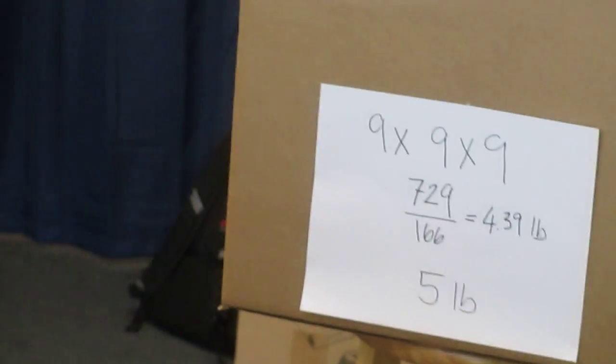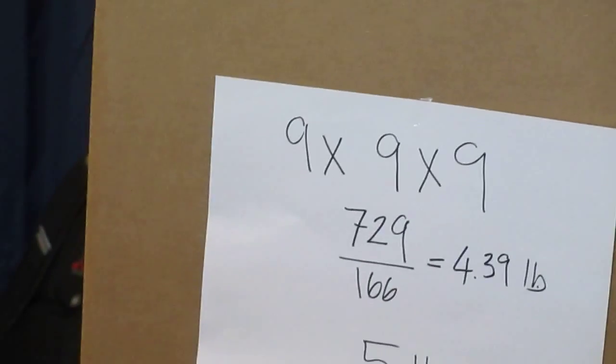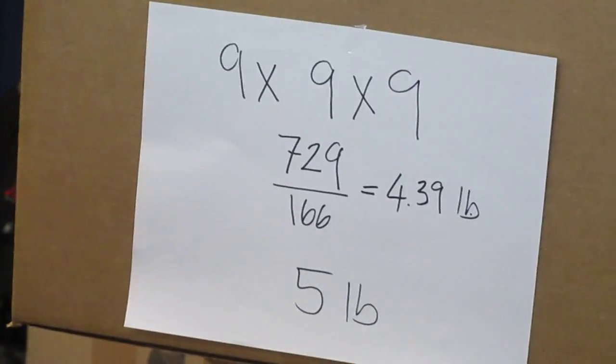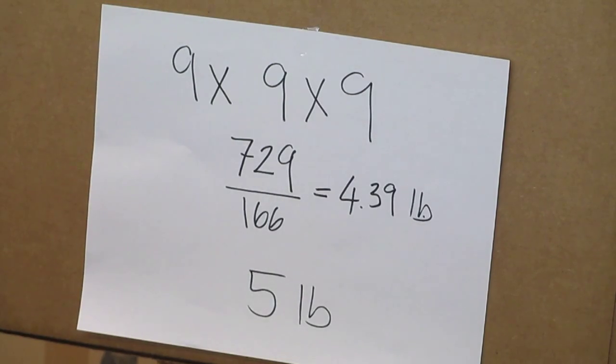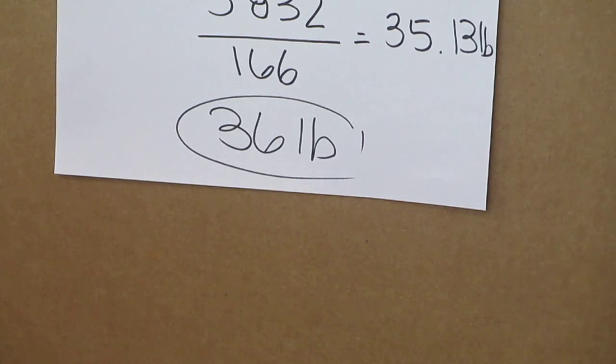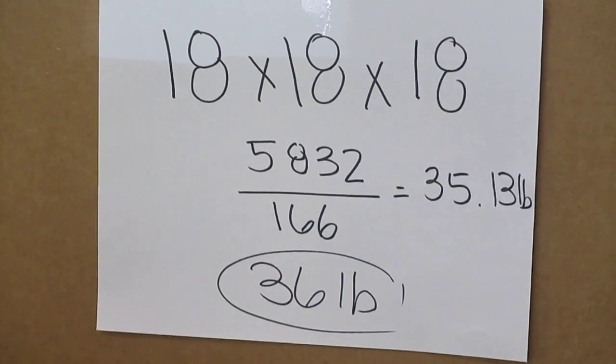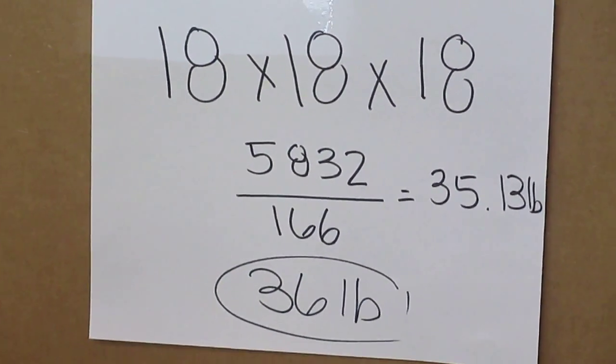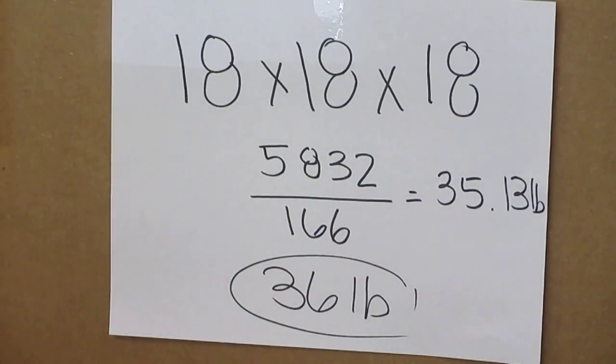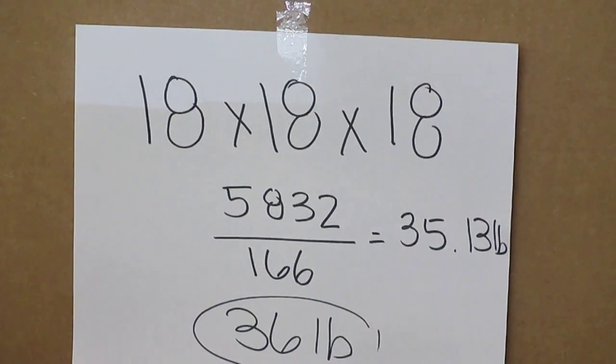We are here to help you and we are here to take care of our customers in the best of our knowledge. So remember: 9 by 9 by 9 equals 5 pounds, 18 by 18 by 18 equals 36 pounds, no matter what you have in there. If it's light, you will get charged 36 pounds. Thank you very much and we'll get connected next time.